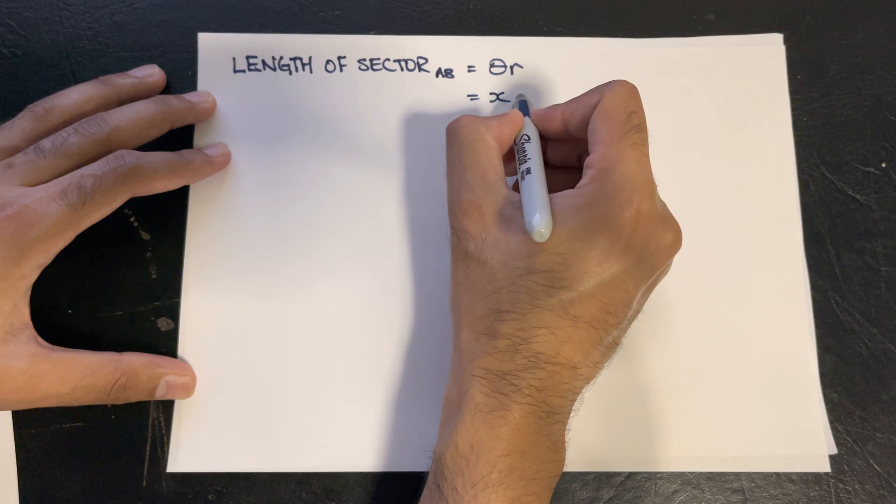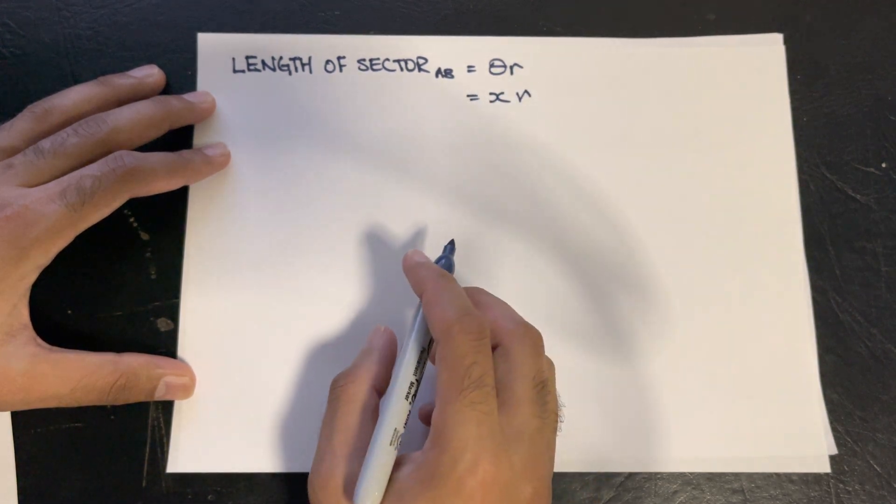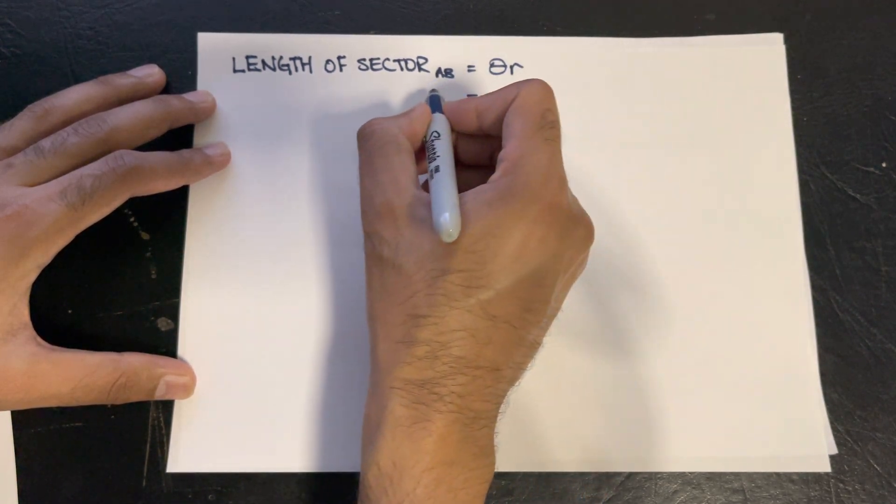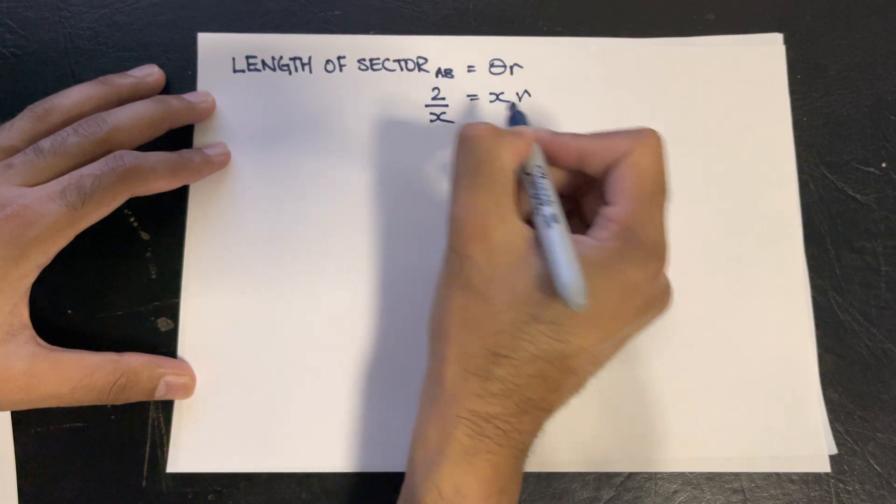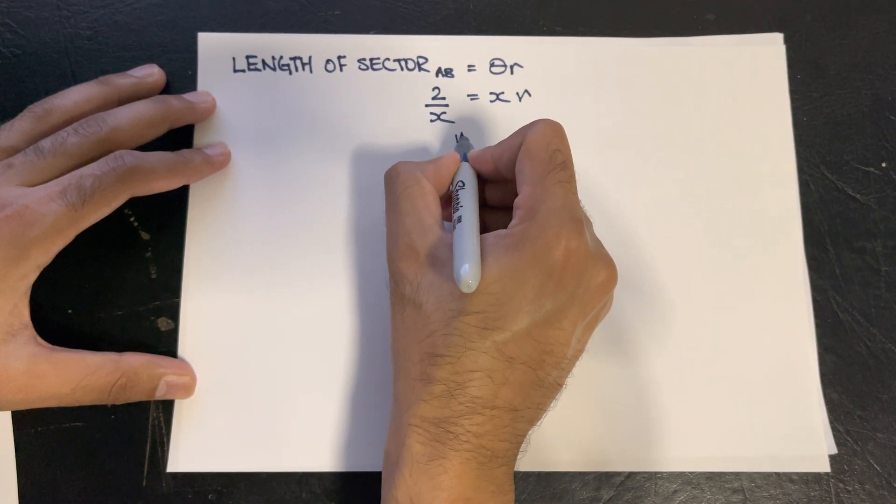stated in the question, and that's being multiplied by r. And we know that to be 2 over x, and we can solve for r, which would be 2 over x squared.